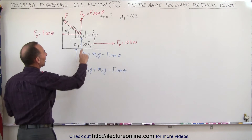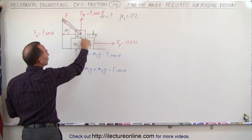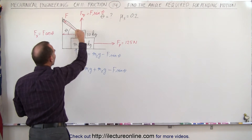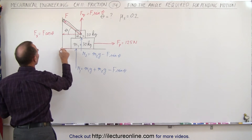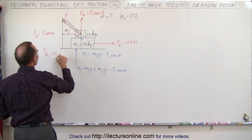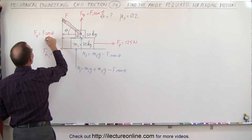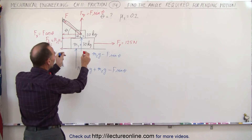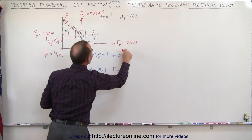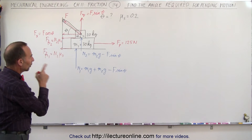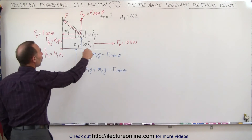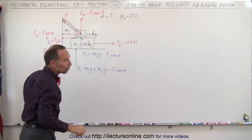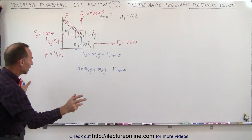Now for the friction forces. There's a friction force at the bottom between the block and the surface, and a friction force between the two blocks — both acting on the bottom block, since that's the only block that can slide. The top block is held in place by the bracket. Friction force 1 equals N1 times μs, and friction force 2 equals N2 times μs. We'll set up equations to sum forces in the x-direction for both blocks.